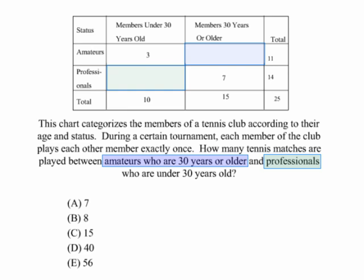Both of them happen to be blank, so we're going to have to do some deduction. If there are 3 amateurs under 30 and a total of 11 amateurs, 11 minus 3 tells us there have to be 8 that are 30 years or older. And if there are 7 professionals 30 years or older out of a total of 14, that gives us 14 minus 7, or 7 professionals under 30. So, 8 amateurs plus 7 professionals equals 15.